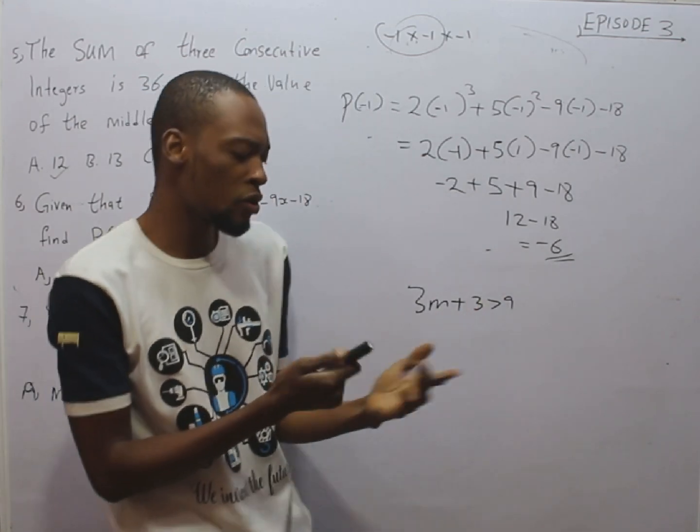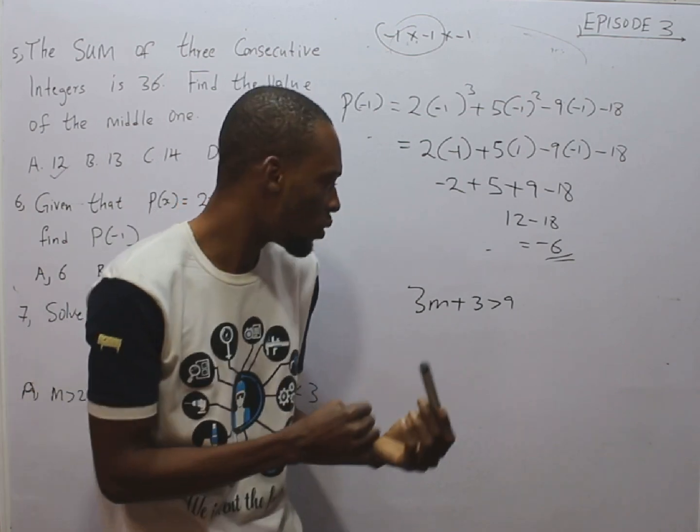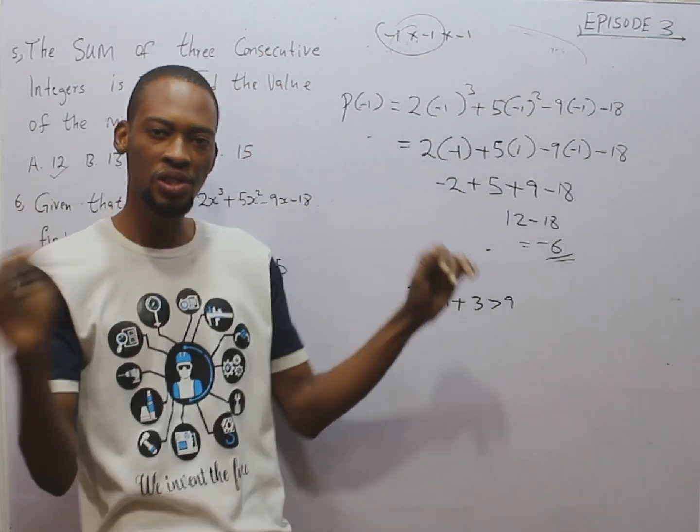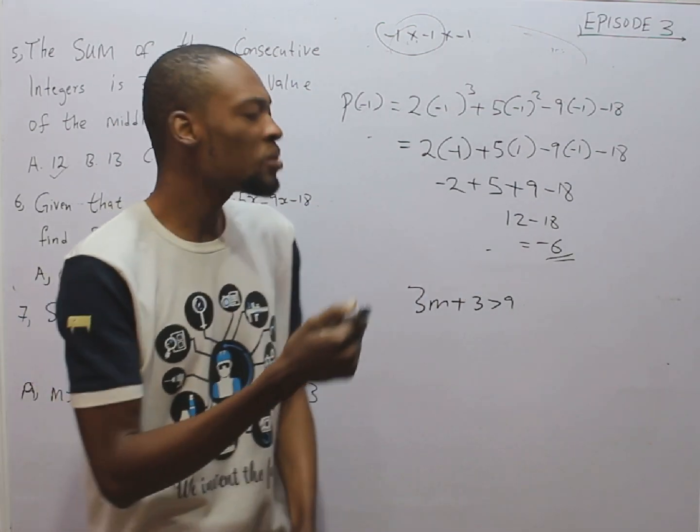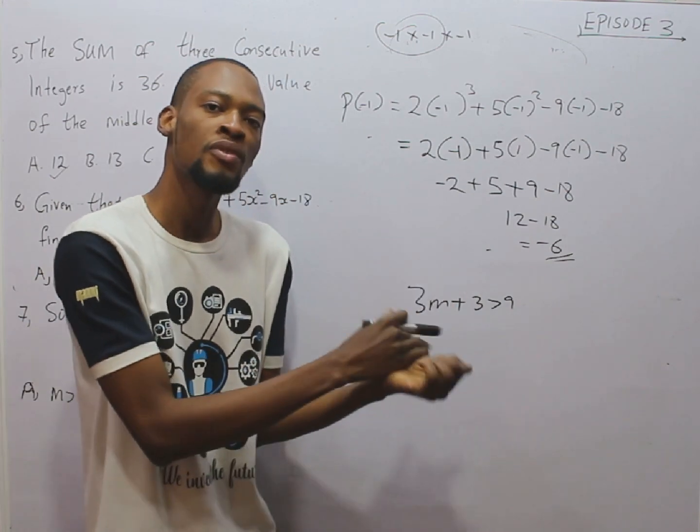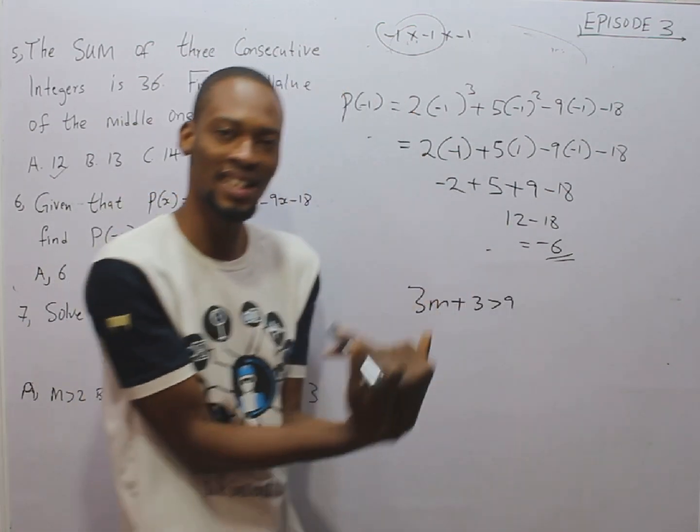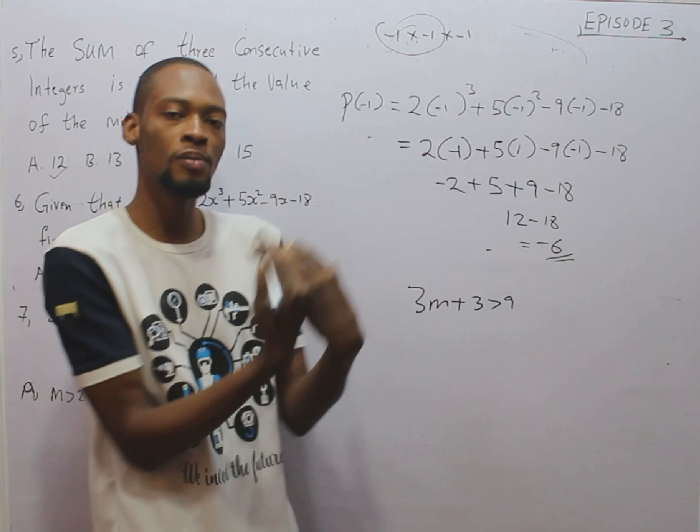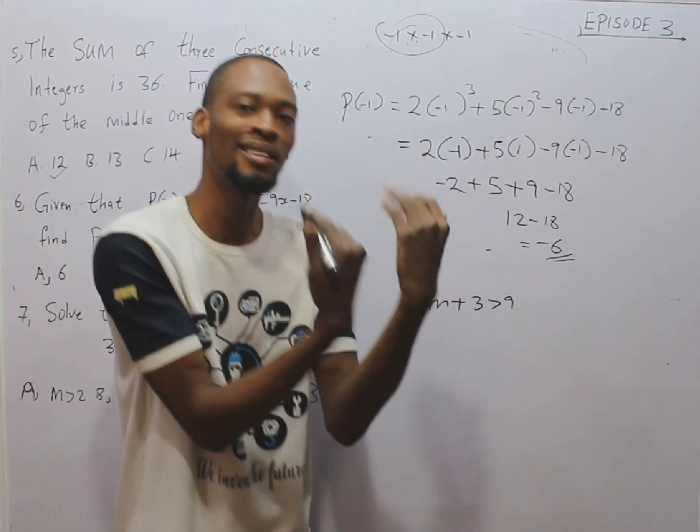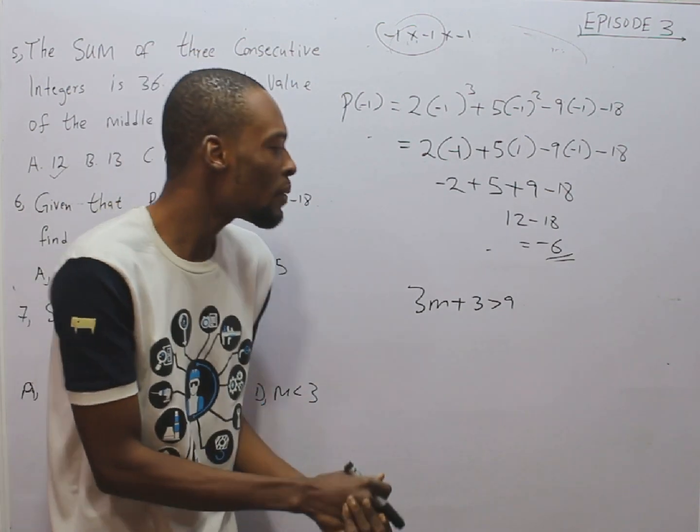This will be easy for us to solve. Now, we solve inequalities the same way we solve equations, except that, when you divide both sides by a negative number, the sign changes. If it were greater than, it becomes less than. If it were greater than or equal to, it becomes lesser than or equal to.